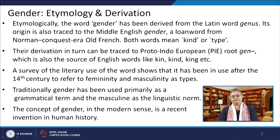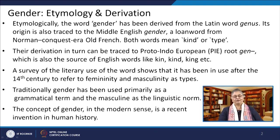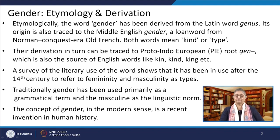If we look at the word gender etymologically, it has been derived from the Latin word 'genus'. Its origin is also traced to the Middle English 'gender', a loan word from the Norman conquest era Old French. Both words mean 'kind' or 'type'. Their derivation in turn can be traced to the Proto-Indo-European root 'gen', which is also the source of English words like kin, kind, king, etc.